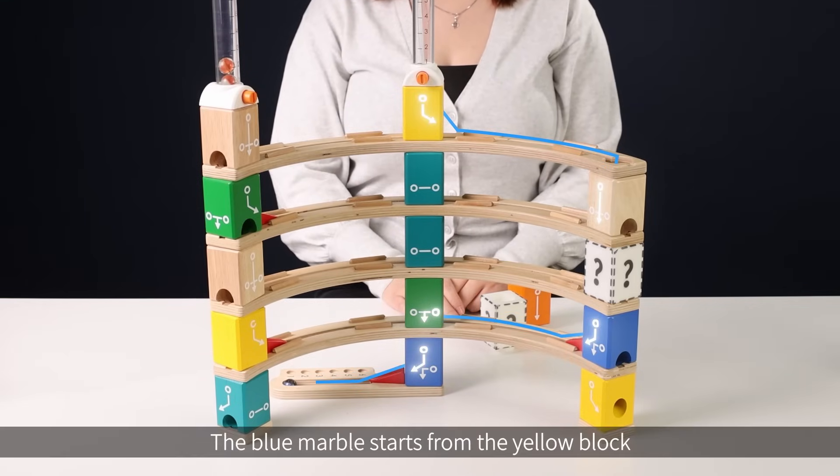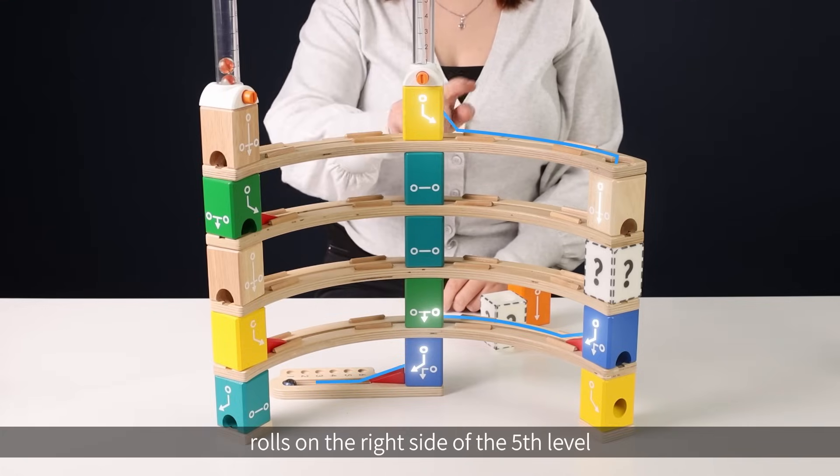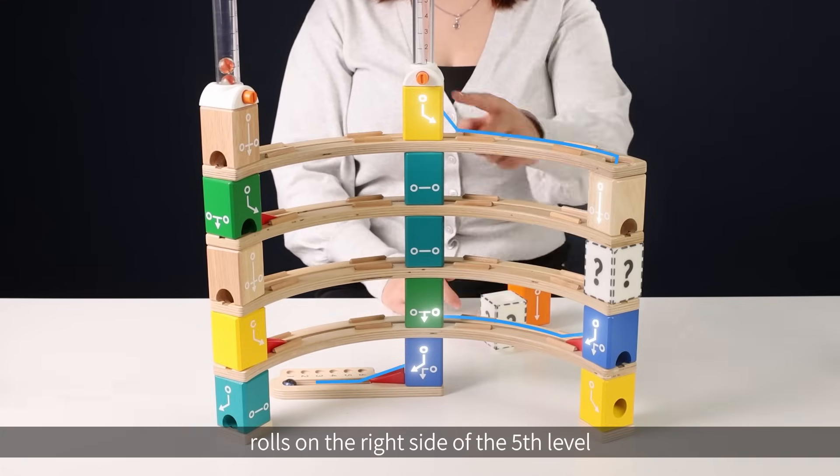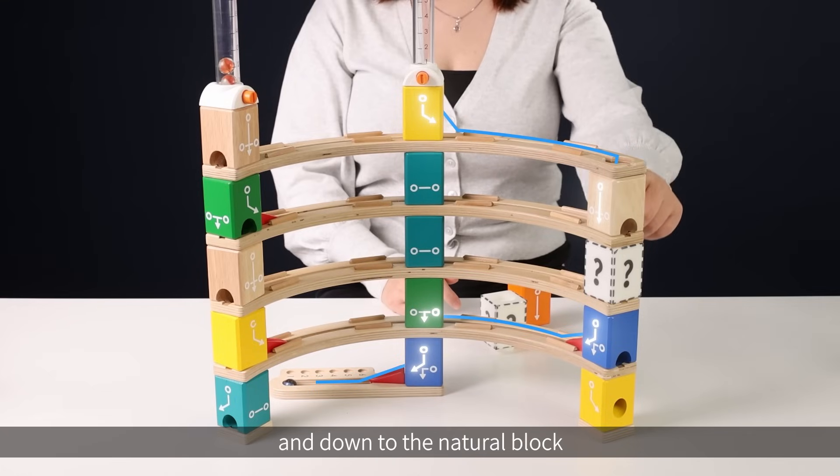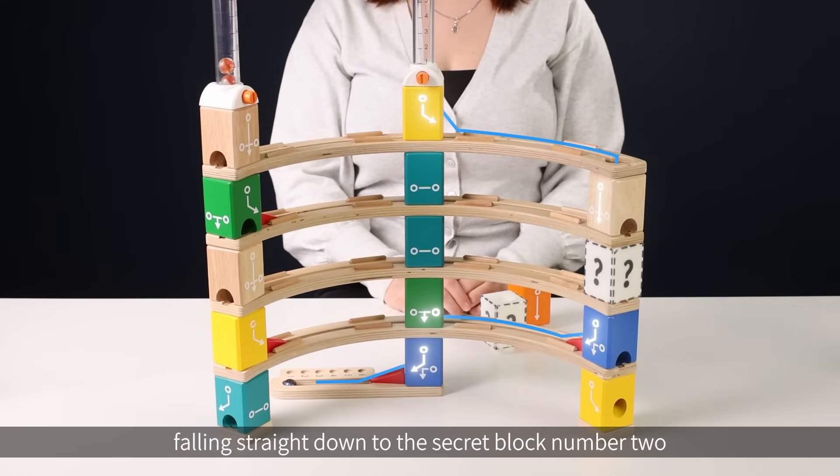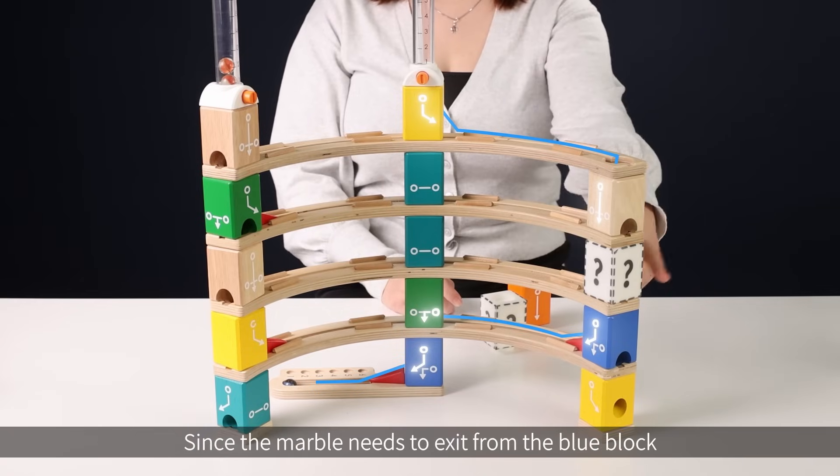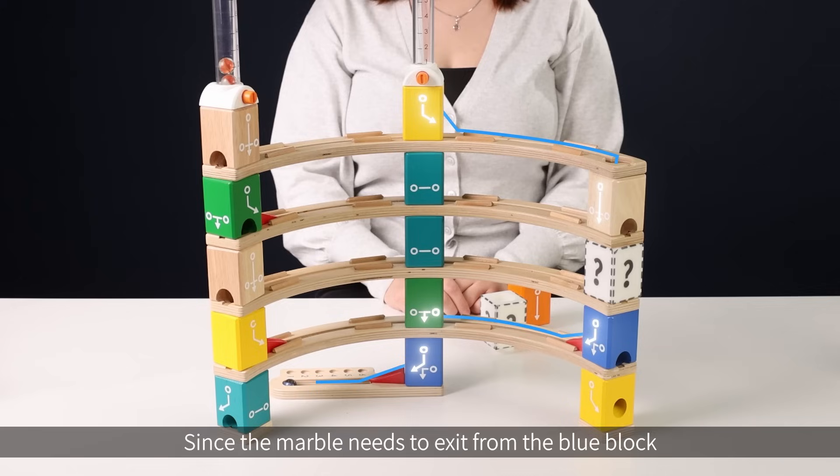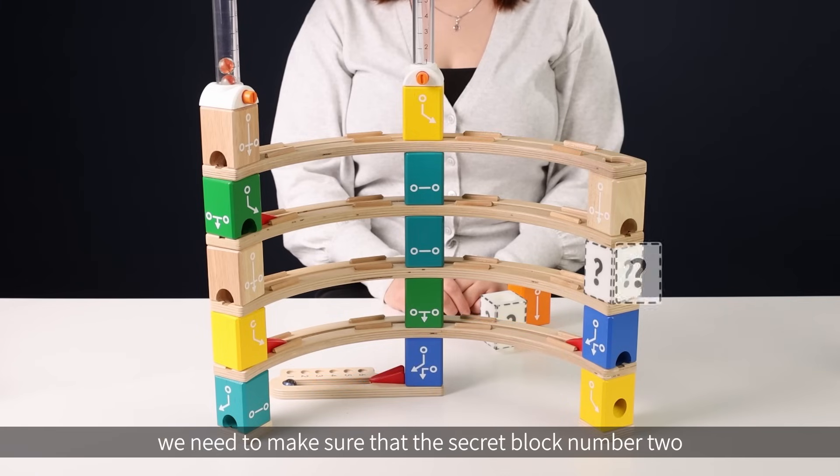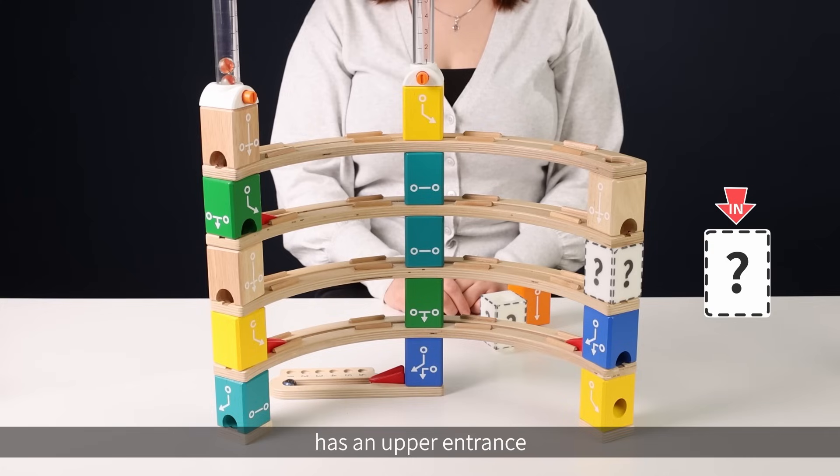The blue marble starts from the yellow block, rolls on the right side of the fifth level and down to the natural block, falling straight down to the secret block number 2. Since the marble needs to exit from the blue block, we need to make sure that the secret block number 2 has an upper entrance and a left or bottom exit, in order to let the marble roll into it and out from the secret block number 2.